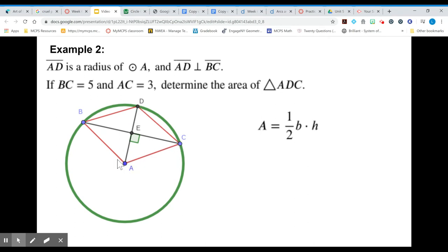If this is a radius this is also a radius so we know that AD equals 3. We also know that EC is half of BC so it's equal to 2.5. We have our base and our height. We multiply those together and we get the area of the triangle.